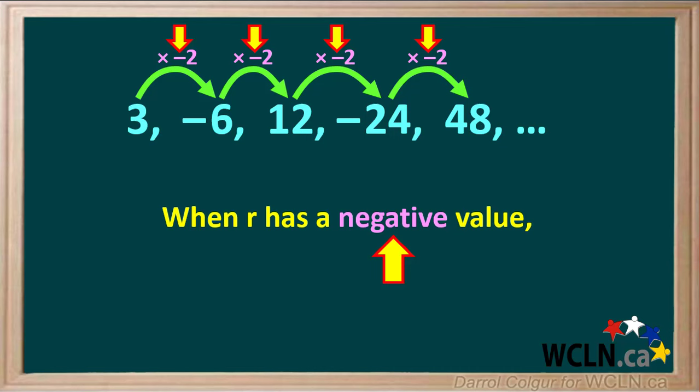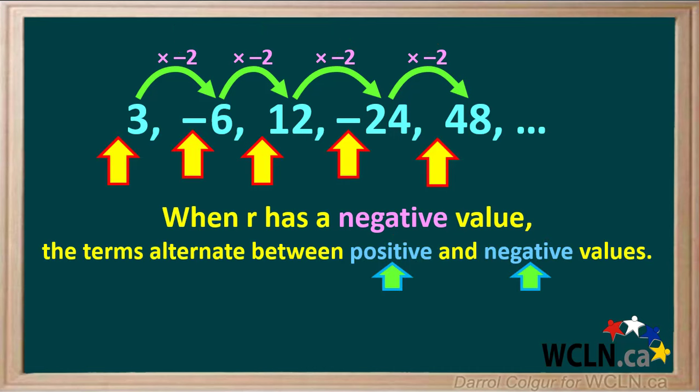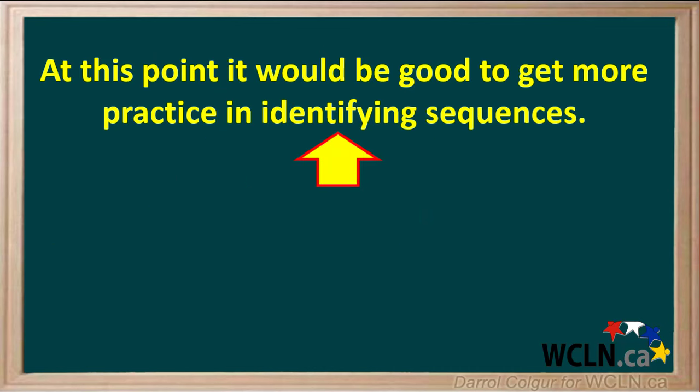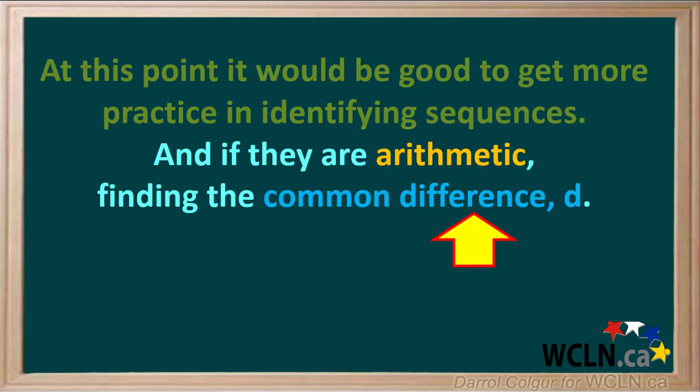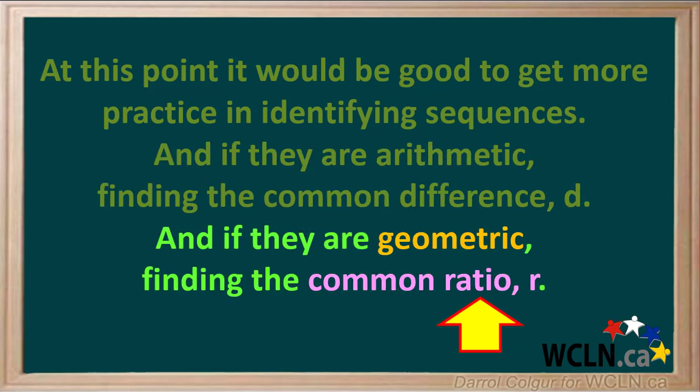Notice that when r has a negative value, the terms alternate between positive and negative values. At this point, it would be good to get more practice in identifying sequences — and if they're arithmetic, finding the common difference d, and if they're geometric, finding the common ratio r.